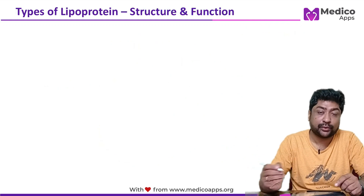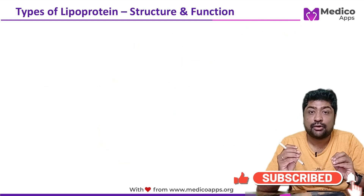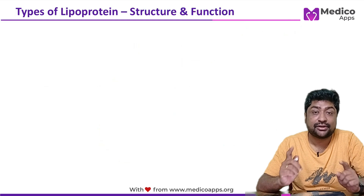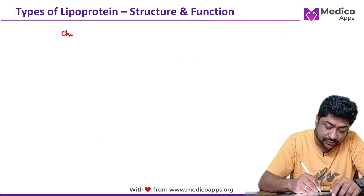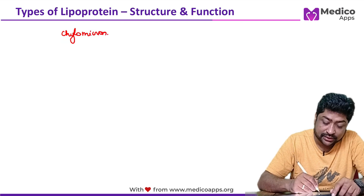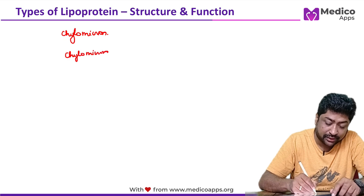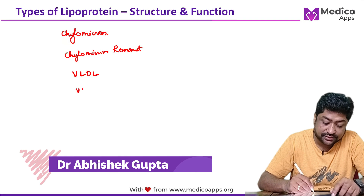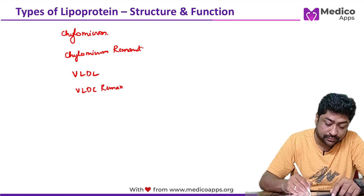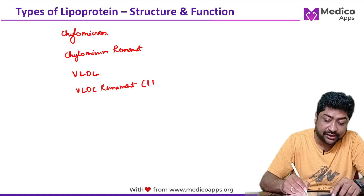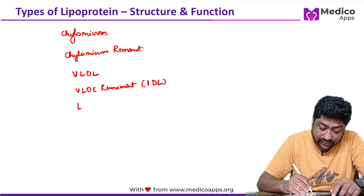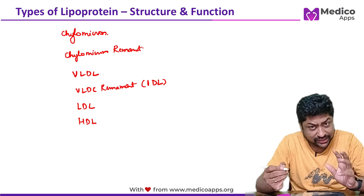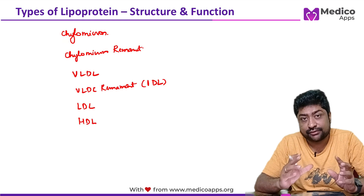The different types of lipoprotein are: chylomicron, chylomicron remnant, VLDL (very low density lipoprotein), VLDL remnant also called intermediate density lipoprotein (IDL), LDL (low density lipoprotein), and HDL (high density lipoprotein). We'll look at each one — their function, where they originate, and their apoproteins.